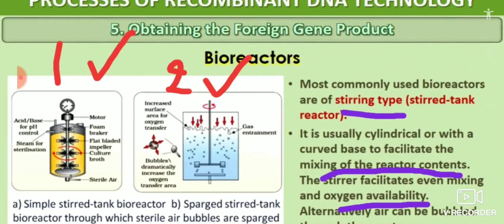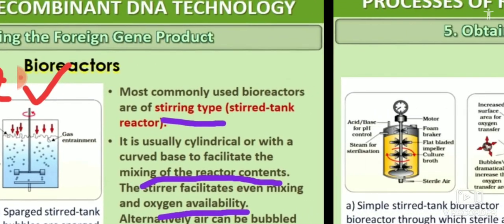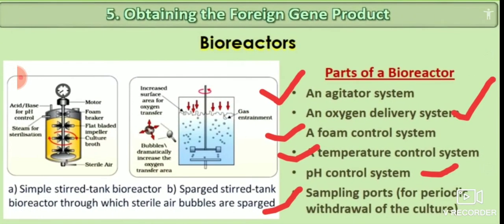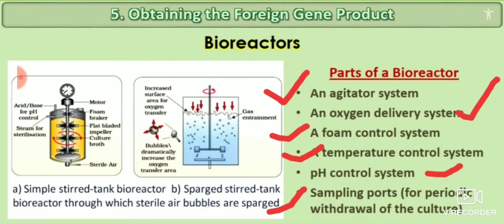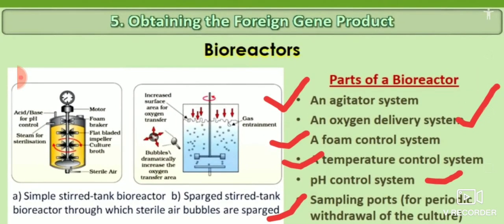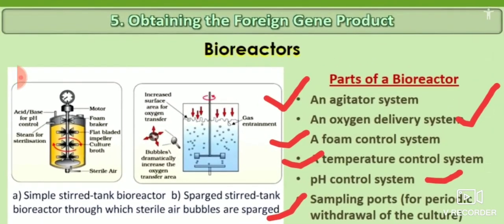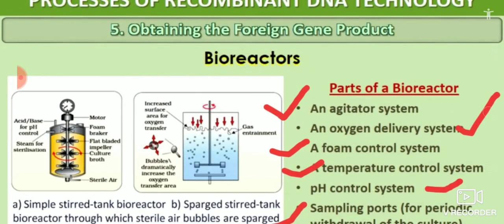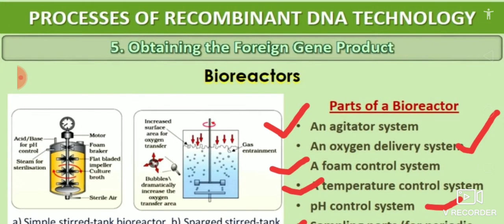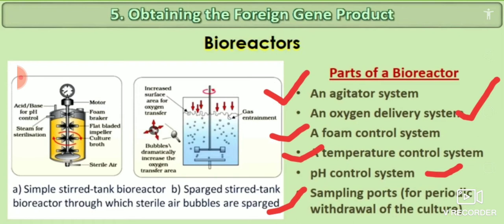The bioreactor has several important parts: an agitator system, an oxygen delivery system, a foam controller system, a temperature controller system, a pH controller system, and sampling ports. These parts control the optimal conditions. The bioreactor provides optimal conditions. Note that the bioreactor is not an automated machine — it is a controlling machine. PCR is the automated machine. This completes the fifth step: obtaining the foreign gene product.